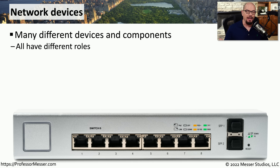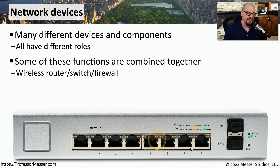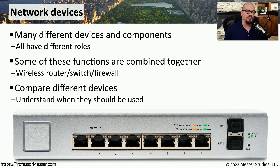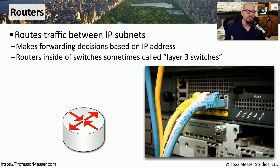If you walk into a data center for any organization, you'll find many different types of systems used for network communication. Sometimes these are single-use devices like a switch, or it may be a device that combines functionality. For example, the SoHo routers used in homes are switches, routers, and wireless access points all in one device. For exam purposes, you should understand what these devices are and when to use them on your network.